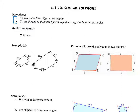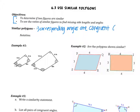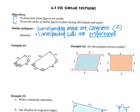Before we jump into determining if polygons are similar, we first need to determine what it means to be similar. Similar polygons are polygons that have two requirements. The first is that their corresponding angles are congruent or equal — all the corresponding angles of the first polygon are congruent to all the corresponding angles of the second polygon. The second requirement is that the corresponding sides are proportional, meaning they have the same ratio. If we set up all the ratios of the corresponding sides, they would all simplify to the same proportion.